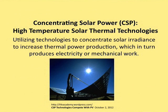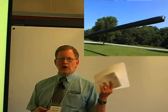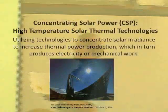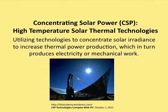Concentrating solar power utilizes technologies to concentrate solar irradiance — sunlight — to increase thermal power production. If we can concentrate the solar energy, we can get it a lot hotter, probably hot enough to melt a balloon. We can use that increasing heat to generate electricity or do mechanical work as we'll see in these systems.